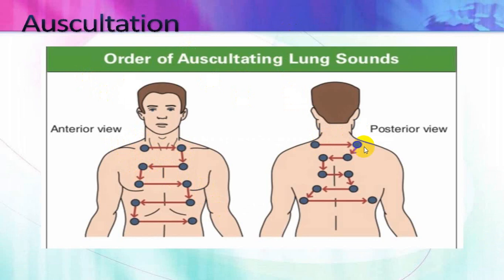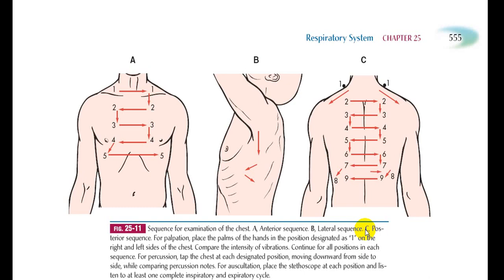In the posterior wall, we cover the suprascapular region, then the interscapular region, and then the infrascapular region — always going from above downwards, comparing right with left, and shifting from lateral to medial. To summarize: anterior, lateral, and posterior are the three regions examined.